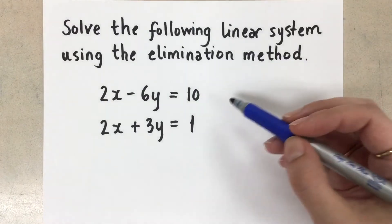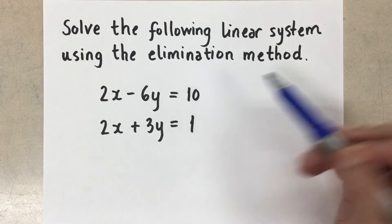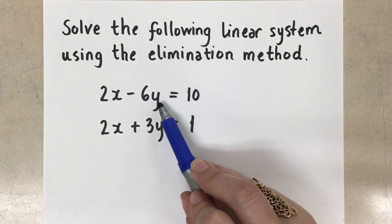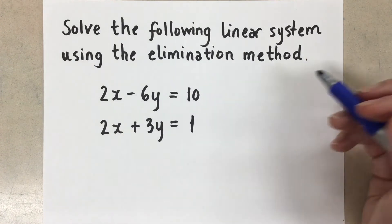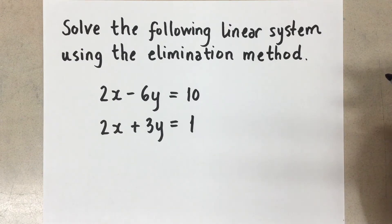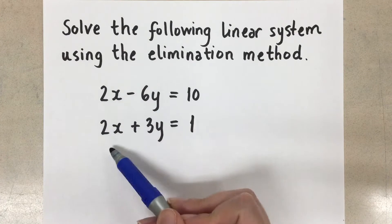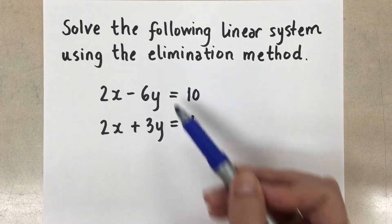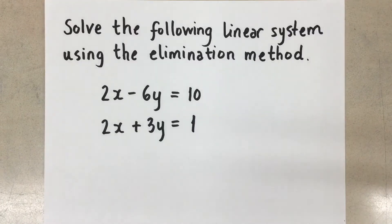So to start, we have two equations in standard form. Sometimes in standard form that constant is on the other side of the equal sign and then you have a zero here. That's the same method can be used. So here, when we want to use the elimination method, we need to write the two equations in columns with like terms. So you see how I have the x terms here, the y terms here, and the constants all underneath of each other.